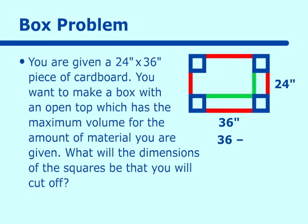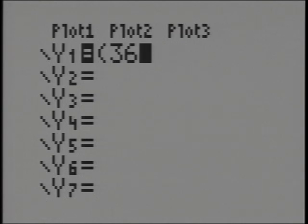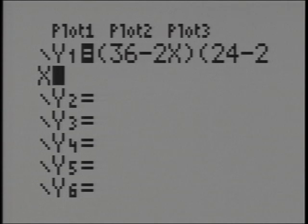Let's say we call the amount on each side x. So you are going to cut off 2x worth for each side. On that side, instead of the bottom part being 24 inches, it's going to be 24 minus 2x — each side of the square being x, and you are cutting off x each time. So our formula is: volume equals length (36 minus 2x) times width (24 minus 2x) times height x.